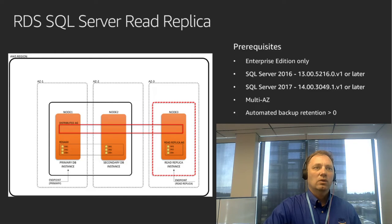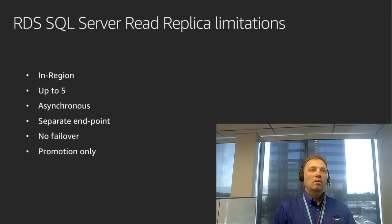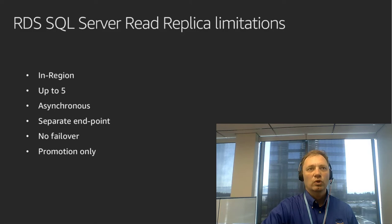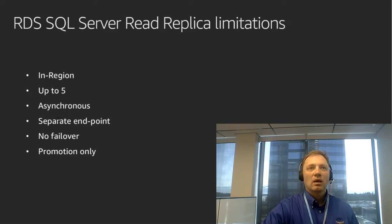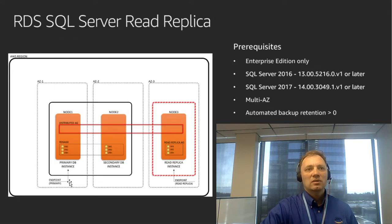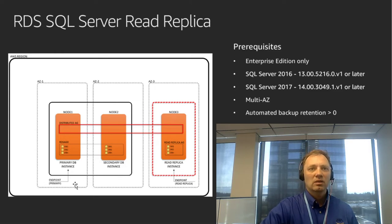Let's talk about some of the limitations of read replica. First, it's in-region — currently it is not possible to launch read replicas in a separate region. You can have only up to five of them at this point. As mentioned, it's an asynchronous replication mechanism only. Every read replica comes with its own separate endpoint, and it is impossible to offload your read traffic to node 3 through the primary endpoint. In order to offload your read traffic, you have to configure your application to go against the read replica endpoint.